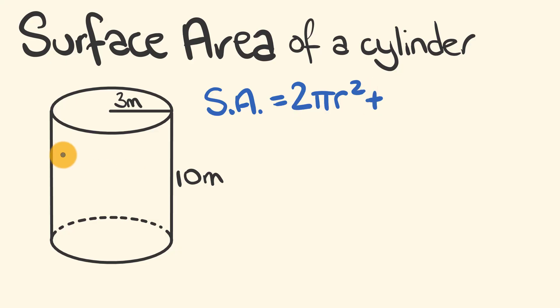To this we're going to add the area of this shape that goes around here. So if you were to open up this cylinder here, you would see that this shape that goes around our cylinder is a really big rectangle, which has a length and a width.